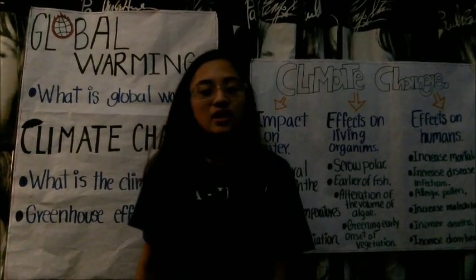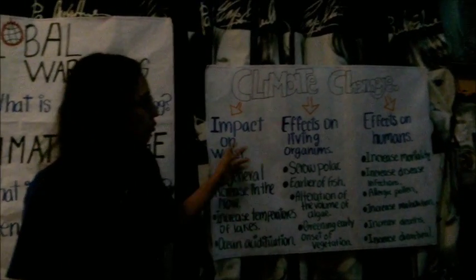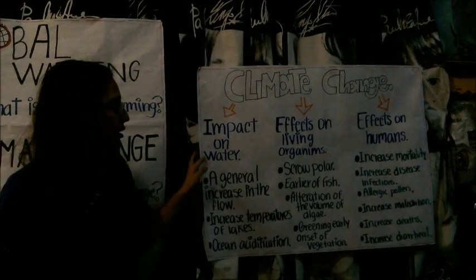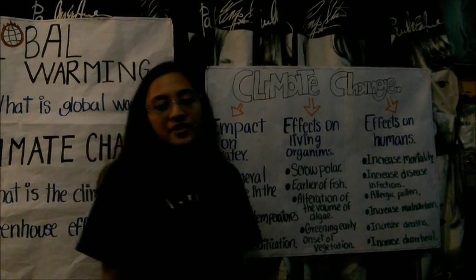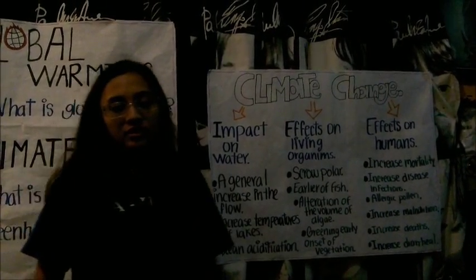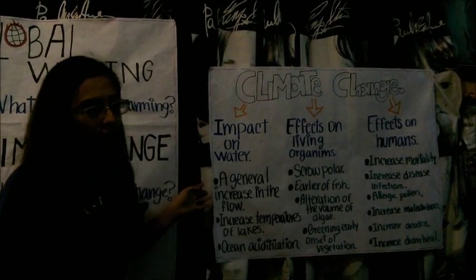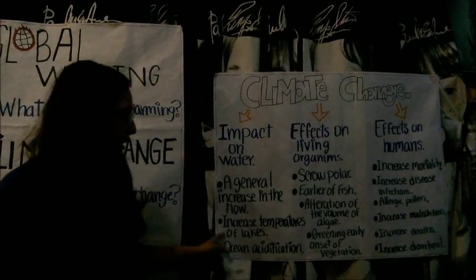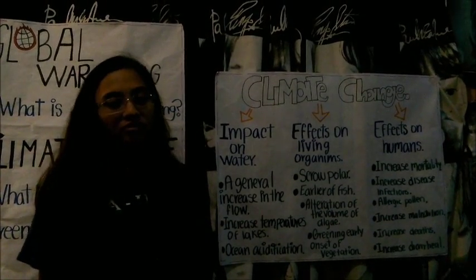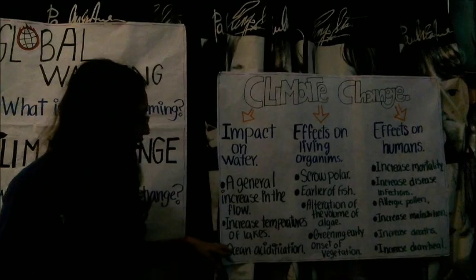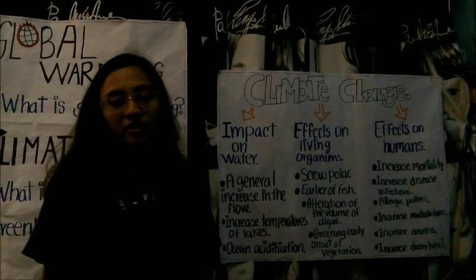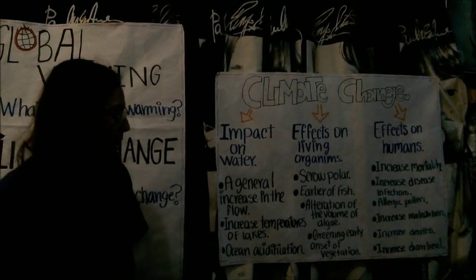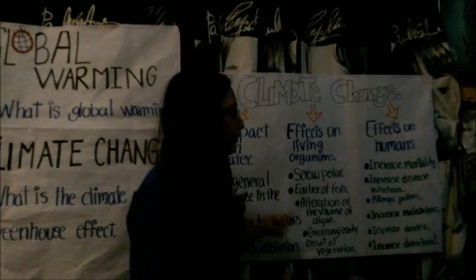The climate change evidence covers three areas: impact on water, effects on living organisms, and effects on humans. First, we will talk about the impact on water. There is a linear increase in flow as temporarily advanced in spring, affecting seas, rivers, deserts, and glaciers and snow. There are increasing temperatures of lakes and rivers in many regions, and ocean acidification by carbon absorption through anthropogenic effects.